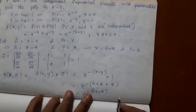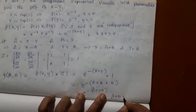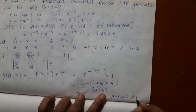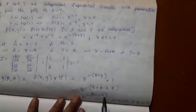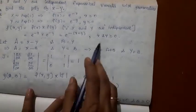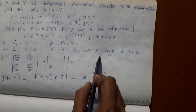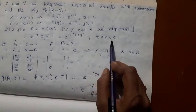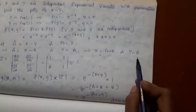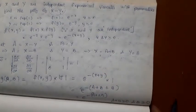What is the range for A and B? Since X = A + B ≥ 0, we have A + B ≥ 0. And since Y = B ≥ 0, we have B ≥ 0.